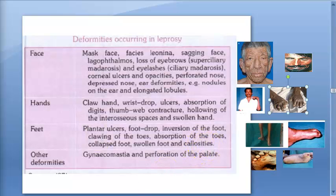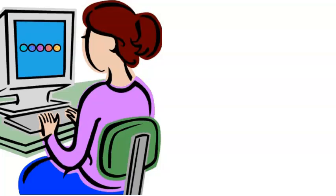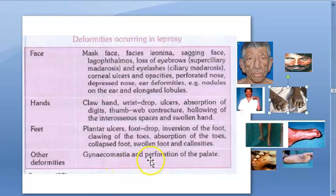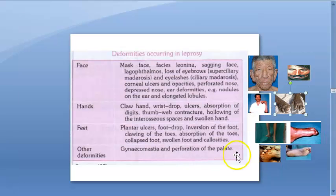Callosities refer to thickened skin — a piece of skin that has become thick. Now, other deformities: here you mention only two things — gynecomastia and perforation of the palate. All of these are possible in leprosy.